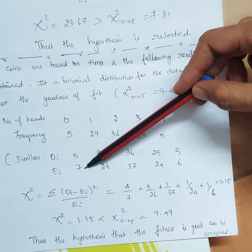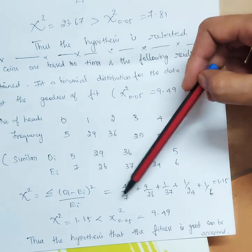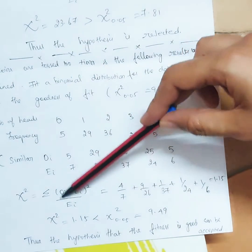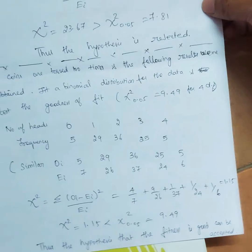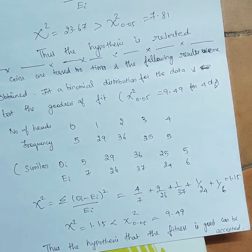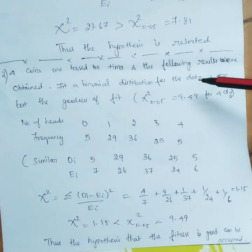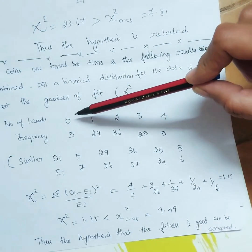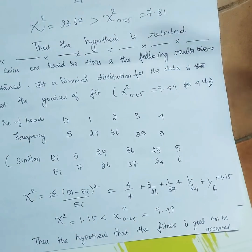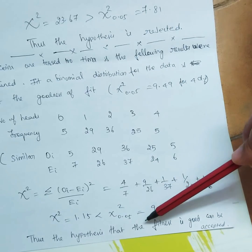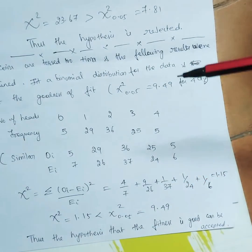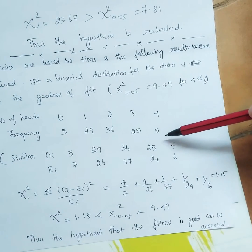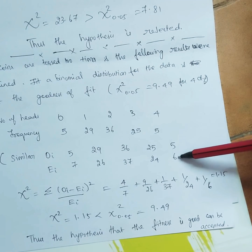Applying the chi-square formula with observed and expected values: (5−7)²/7 + (29−26)²/26 + and so on for all values. The summation gives chi-square = 1.15. The tabular value given is chi-square at 0.05 equals 9.49 for 4 degrees of freedom (5 values minus 1). Since 1.15 is less than 9.49, the hypothesis that the fitness is good can be accepted.